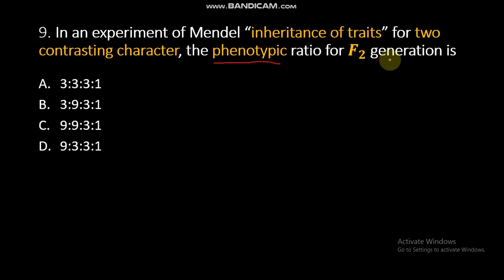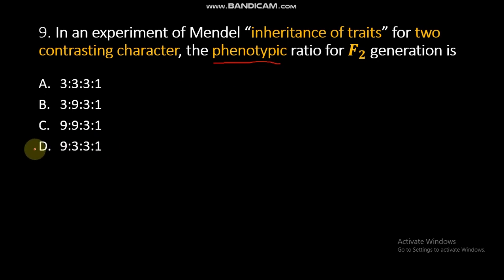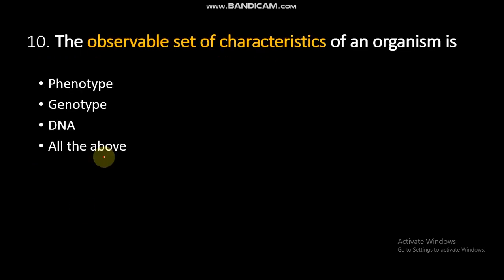Question number 9: In an experiment of Mendel, for inheritance of traits for two contrasting characters, the phenotypic ratio for F2 generation is? It is 9:3:3:1. So, D is the correct answer.